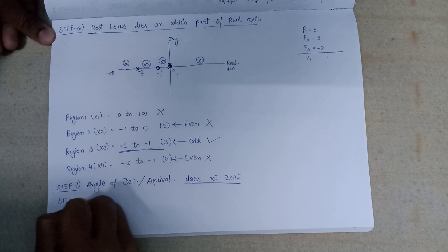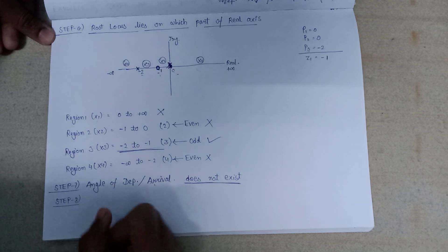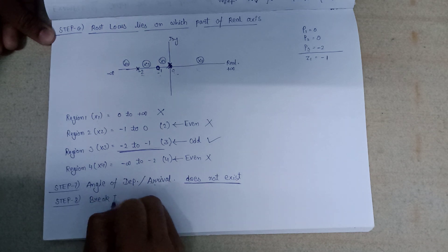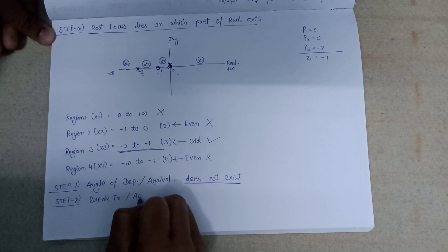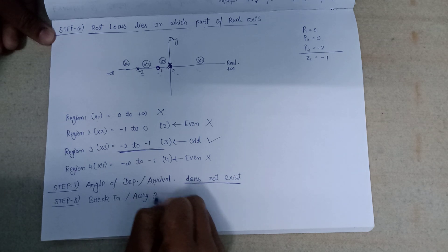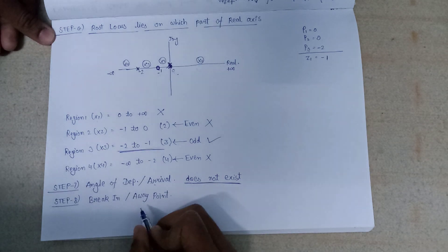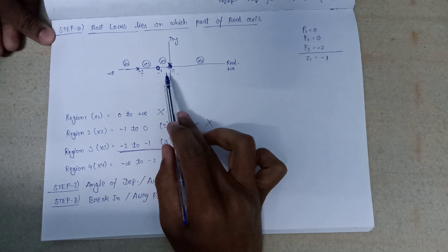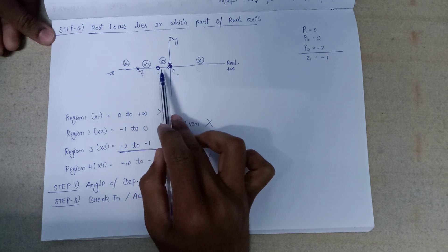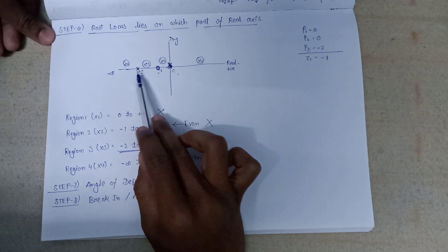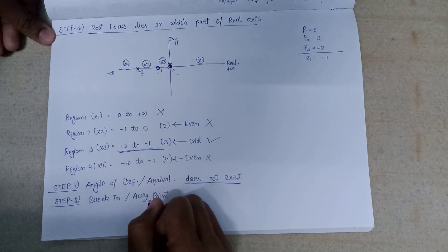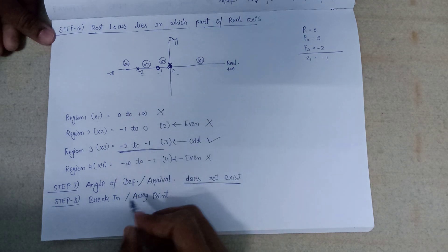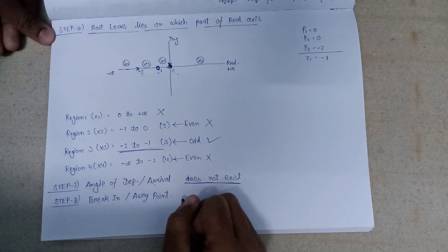Moving to the next step: calculation of break-in or break-away points. Since there are no two adjacent poles on the real axis enclosing a segment, and no two adjacent zeros on the real axis, both the break-away and break-in points do not exist.